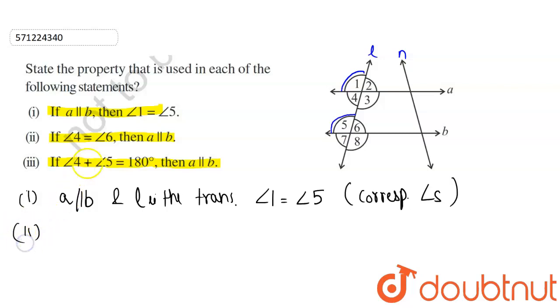In the second part, angle 4 equals angle 6. You can see that both these angles are a pair of alternate interior angles. When alternate interior angles are equal, the lines a and b are parallel.